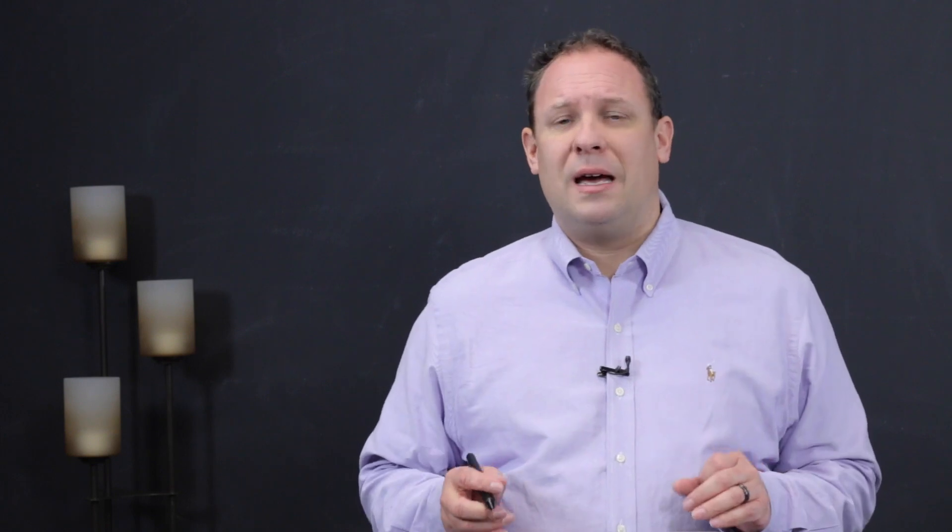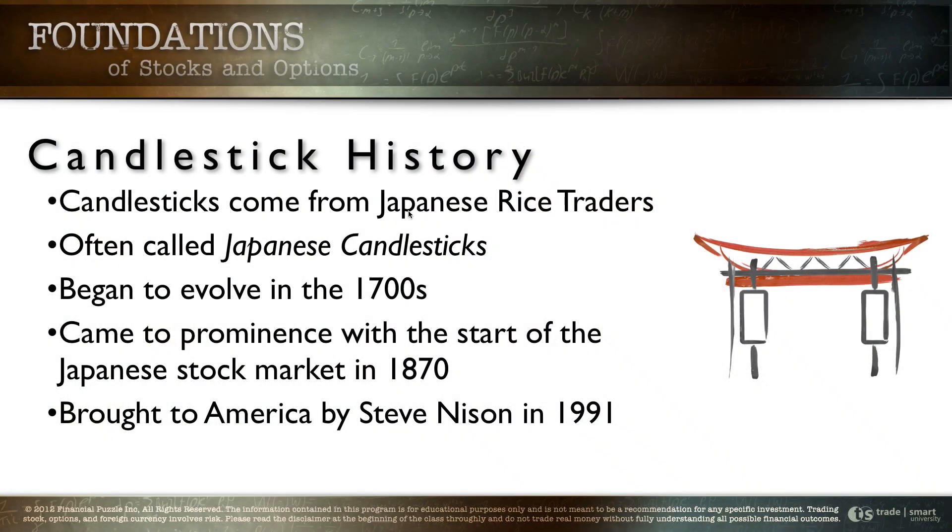Well out of all that came this study that we call candlestick trading. Very fascinating history if you ever get a chance to learn more about it it's worth the time. It's very interesting but let's learn about candlesticks here. So candlesticks come to us from the Japanese rice traders. They're often called Japanese candlesticks.